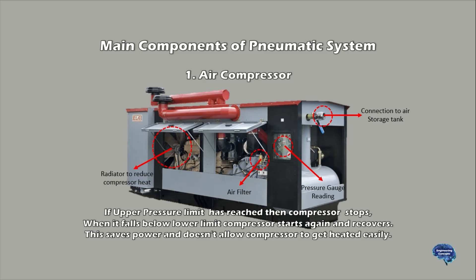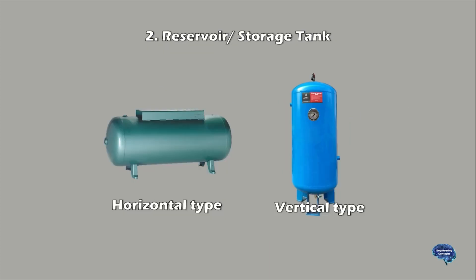When the tank's pressure reaches its upper limit, the air compressor shuts off. The compressed air is held in the tank until called into use. The air pressure in the storage tank can be used for a variety of applications, utilizing the kinetic energy of the air as it is released and the tank depressurizes. When tank pressure reaches its lower limit, the air compressor turns on again and repressurizes the tank.